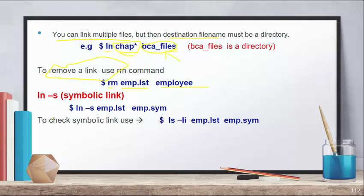Now for soft links: use the -s option with ln. For example: ln -s emp.lst emp.sim — emp.lst is the source (original file, already existing) and emp.sim is the destination (new file, should not already exist). To check a hard link, the inode number must be the same and the link count should show 2, 3, or 4 instead of 1.